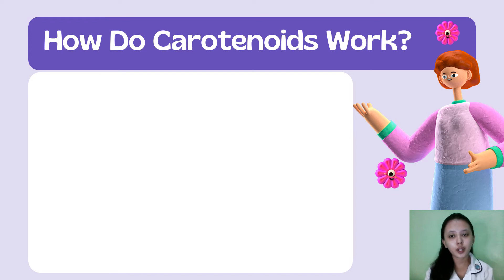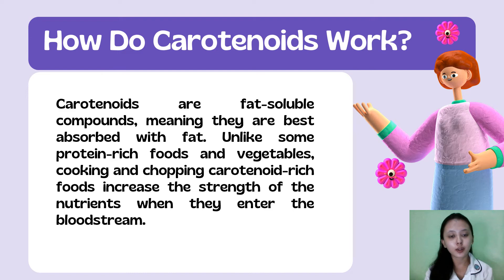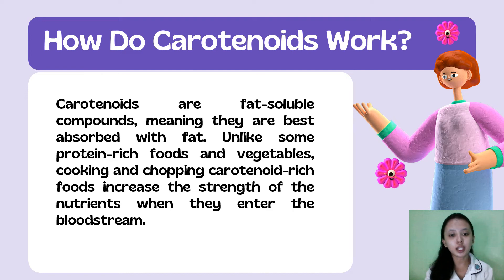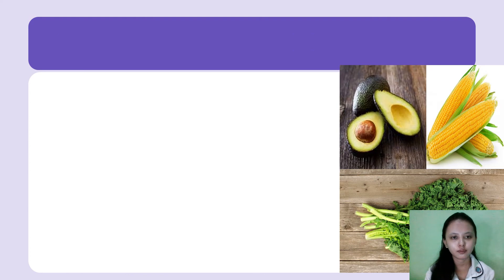How do carotenoids work? Carotenoids are fat-soluble compounds, meaning they are best absorbed with fat. Unlike some protein-rich foods and vegetables, cooking and chopping carotenoid-rich food increases the strength of the nutrients when they enter the bloodstream.